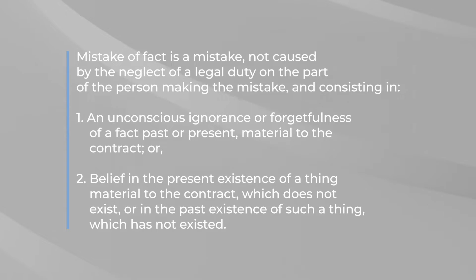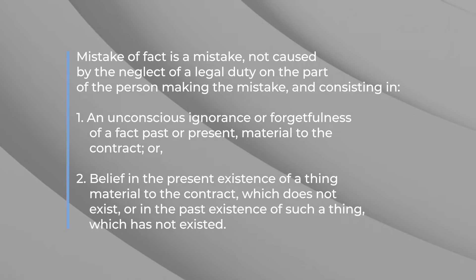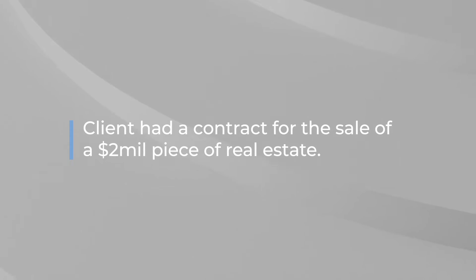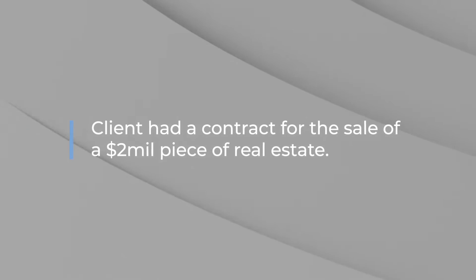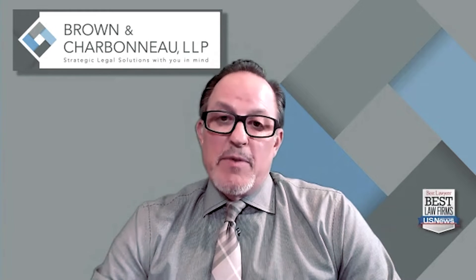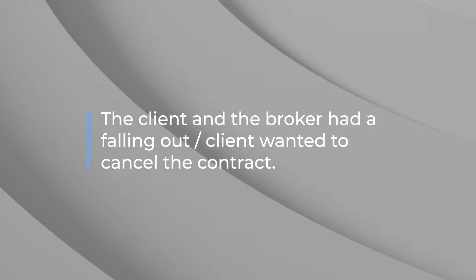The best way to describe it is to tell you about a case that we just worked on. Our client had a contract with a broker for the sale of a $2 million piece of real estate, but they were also trying to lease it at the same time. So there was a second contract — a listing agreement for the lease of the property. What happened next is the client and the broker had a falling out and the client wanted to cancel both the listing for the sale and the lease of the property.